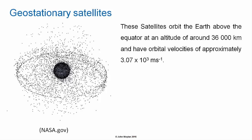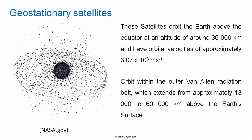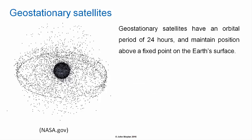Geostationary satellites orbit the Earth above the equator at an altitude of around 36,000 kilometers, with orbital velocities of approximately 3.07 × 10³ meters per second. Geostationary satellites orbit within the outer Van Allen radiation belt, which extends from approximately 13,000 to 60,000 kilometers above the surface of the Earth.